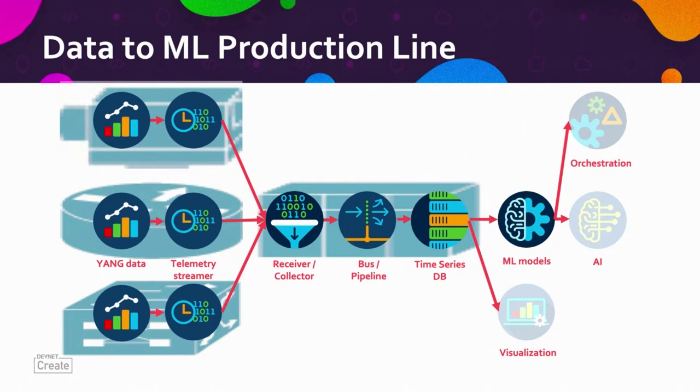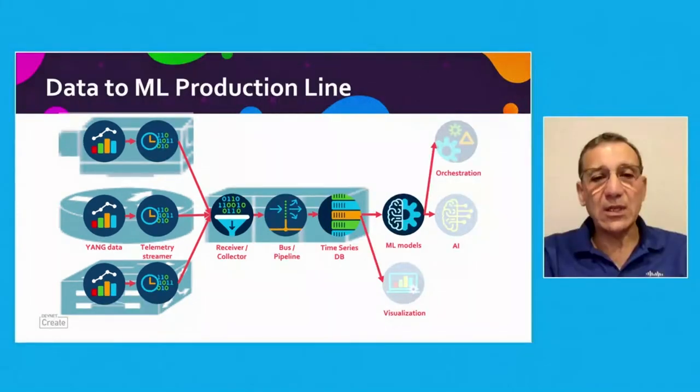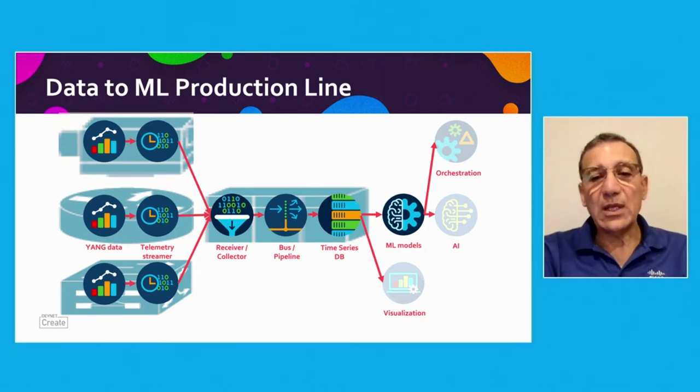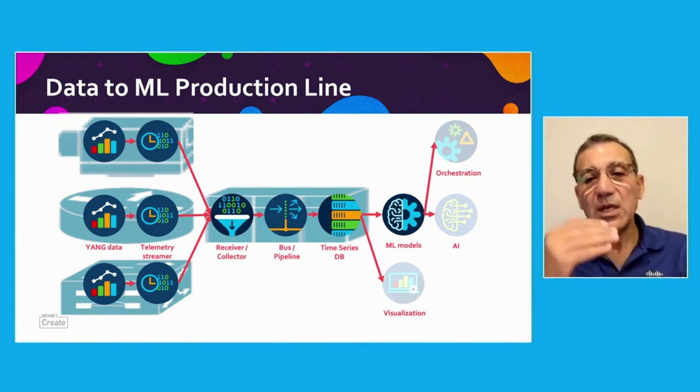Today, we have also the means to securely transport this data to collection points or receivers. Those collectors and receivers can be either in the cloud at some central location, or they can be at the edge, they can be on premise, or they can be close to where the data is being produced. From there, we can put the data on buses or pipelines that would take that data to be fed into time series databases.